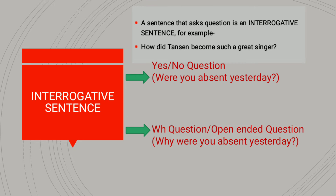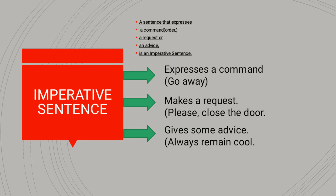The next type of sentence is interrogative sentence. An interrogative sentence is one that asks a question. For example, 'Are you eating a banana?' Interrogative sentences are also of two types: yes/no questions and wh-questions. Yes/no questions are those for which we give an answer in either yes or no. Wh-questions, or open-ended questions, require a full sentence in reply.